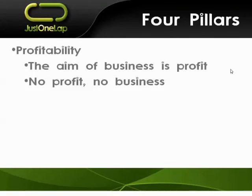Looking at the first pillar: profitability is the overarching aim of a business — it's going to make profit. If there's no profit, there's no business. There may be profit in the future, but the essential point is that there is profit. In the entire life cycle of a business — from beginning, growing, maturity, even to winding down — there should be more outputs than inputs. On a very basic level, that's what profit is.